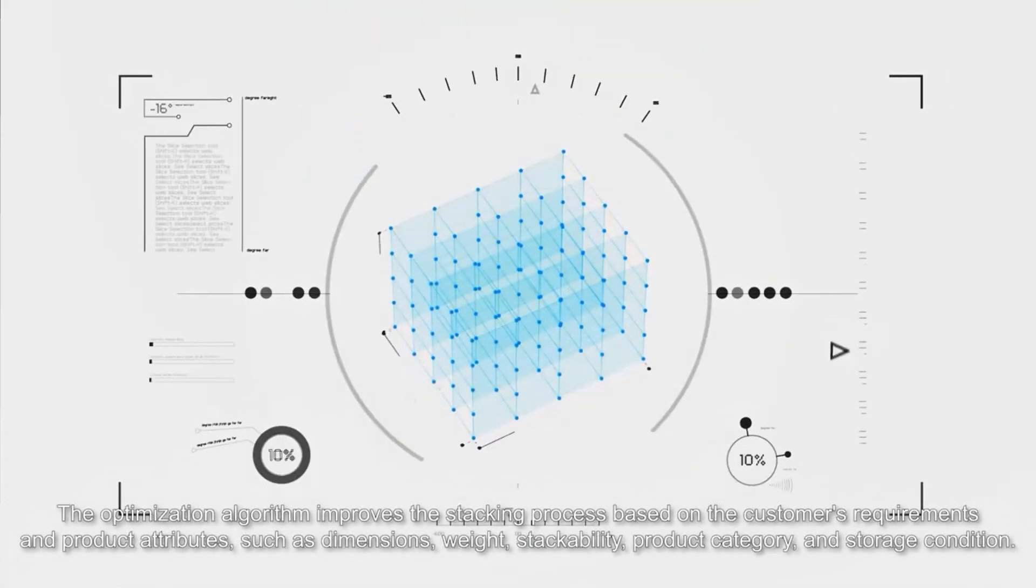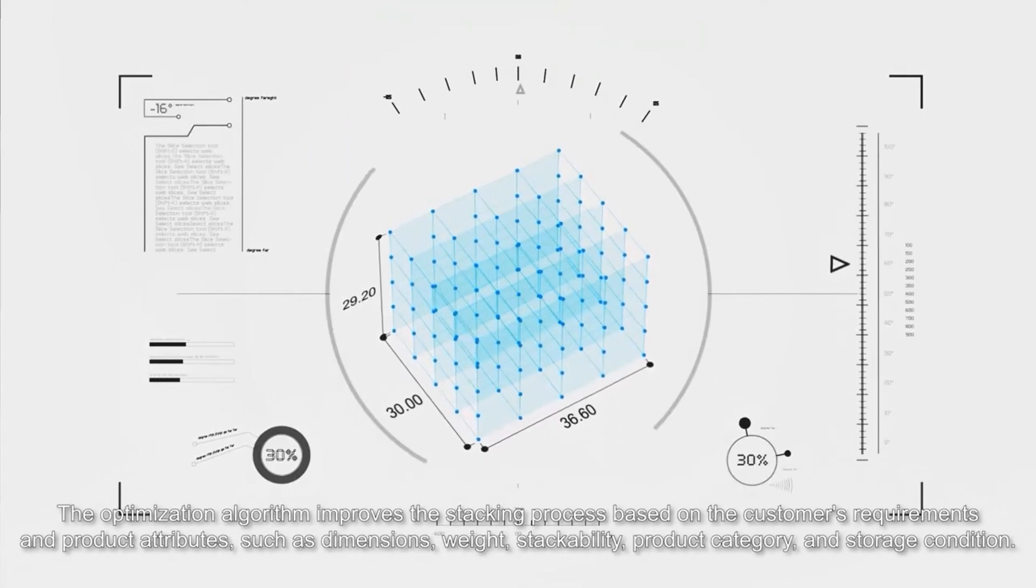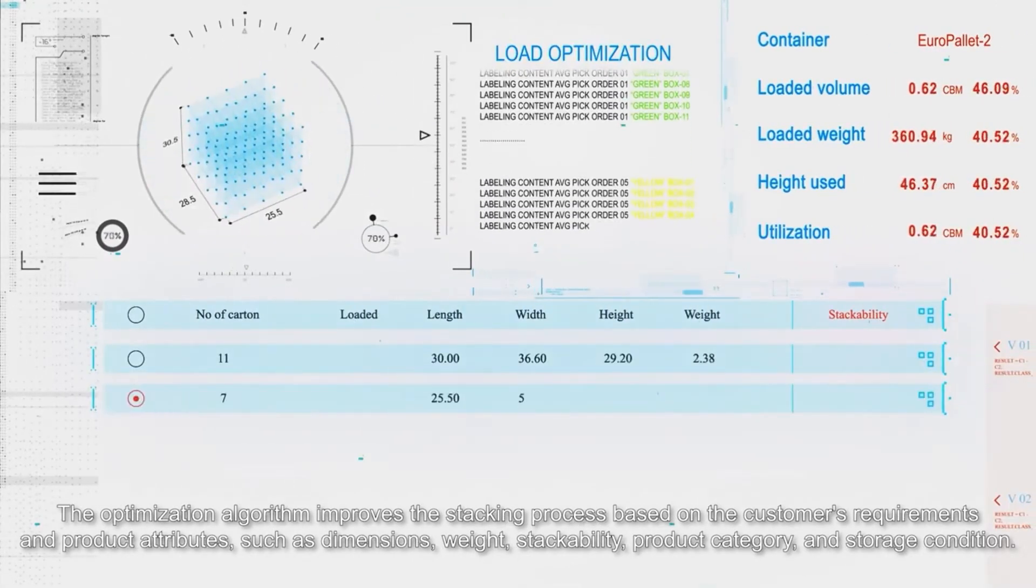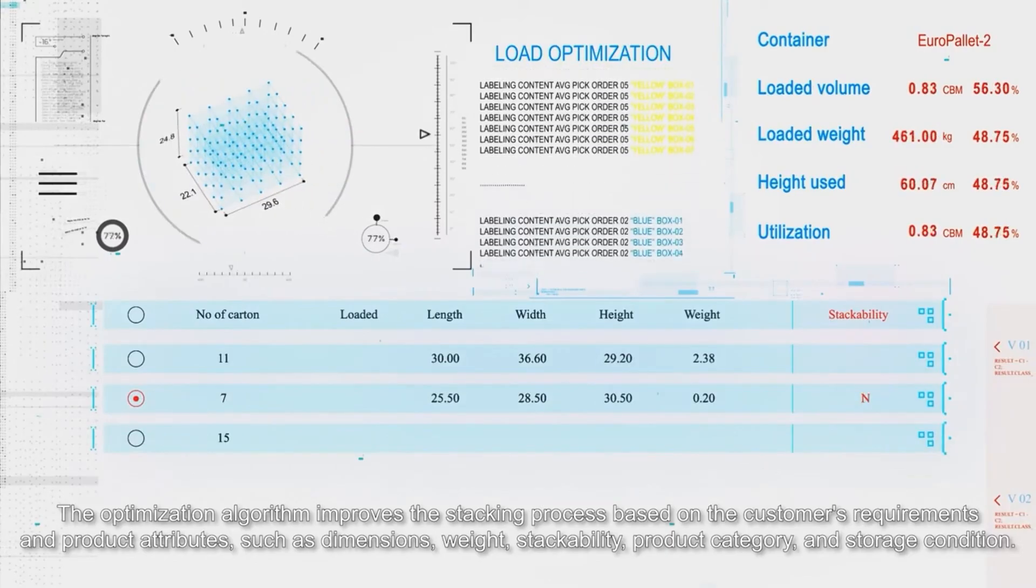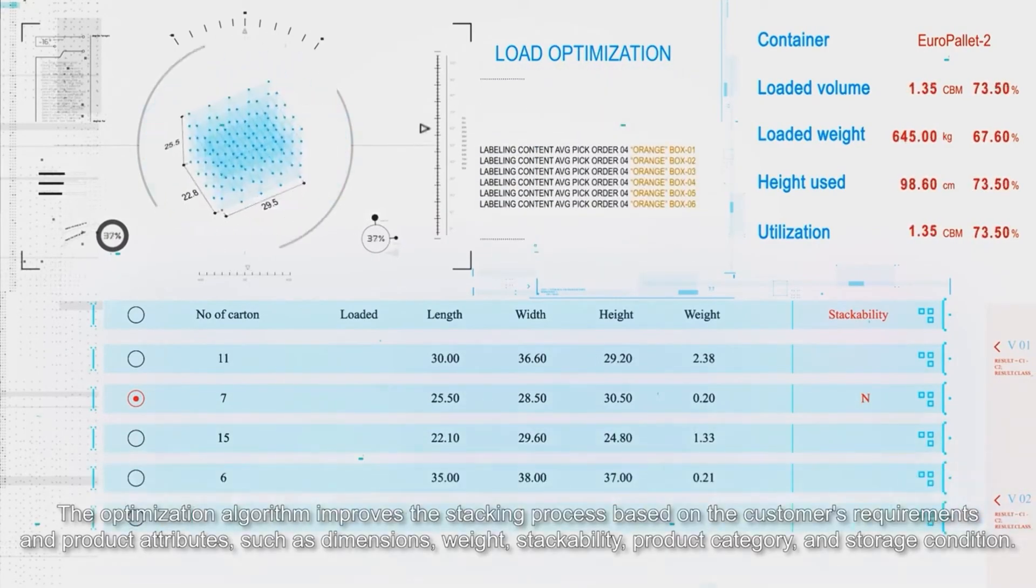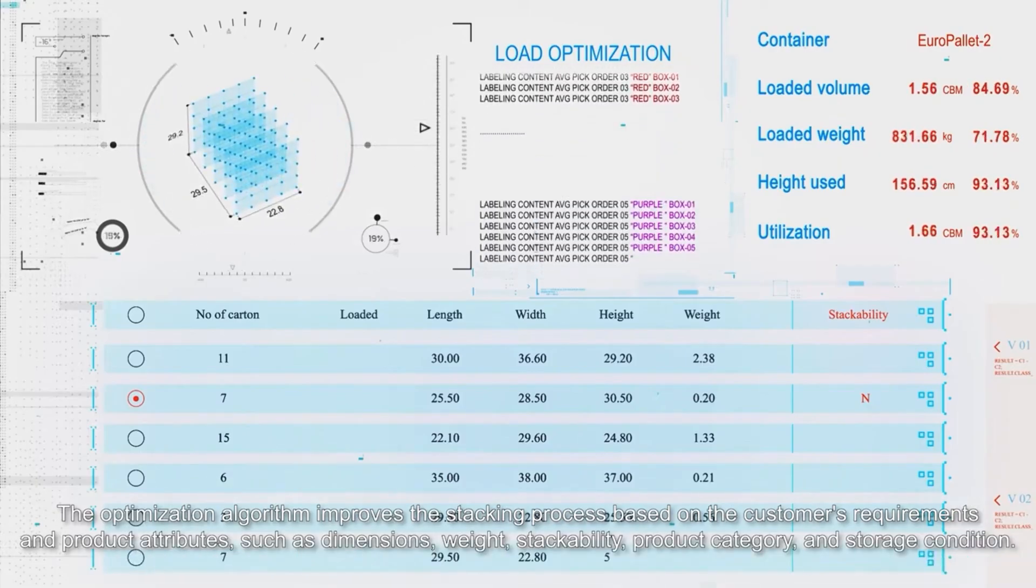The optimization algorithm improves the stacking process based on the customer's requirements and product attributes, such as dimensions, weight, stackability, product category, and storage condition.